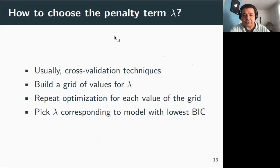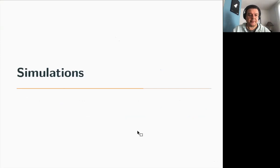Back to the lasso now. The problem of how to choose the penalty term lambda boils down to choosing this lambda. And usually we use cross-validation techniques, but the brute force approach also works pretty well, and that's what we use in this study. Here, we build a grid of values for lambda, then we repeat optimization. We feed the model with the covariates for each value of the grid, and we pick the lambda that corresponds to the model with the lowest BIC value. This is how we pick the penalty term lambda.